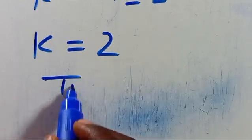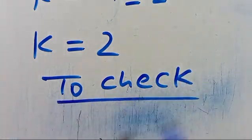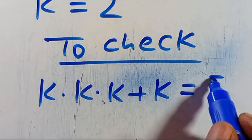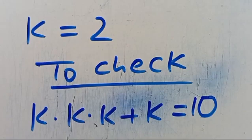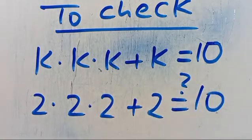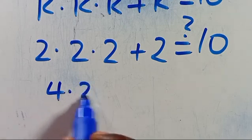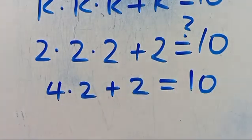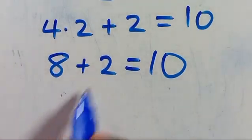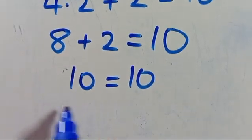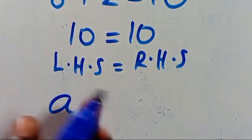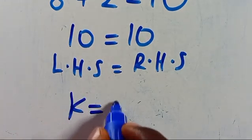Let us now check. Remember we have k times k times k plus k equals 10. So when k equals 2, here will be 2 times 2 times 2 plus 2, and it's going to give us 10. 2 times 2 is 4, times 2 plus 2 equals 10. 4 times 2 is 8, plus 2 equals 10. So we have 8 plus 2 equals 10. Since the left-hand side equals the right-hand side, this implies that k equals 2 is satisfied.